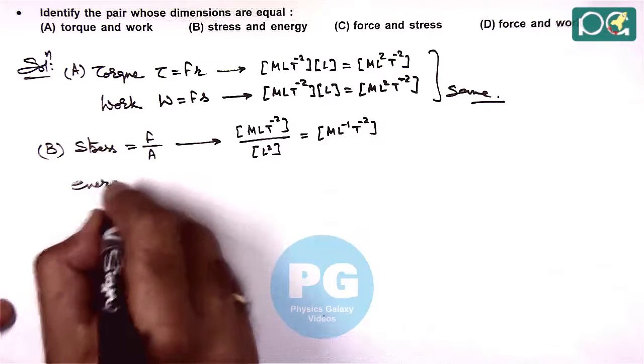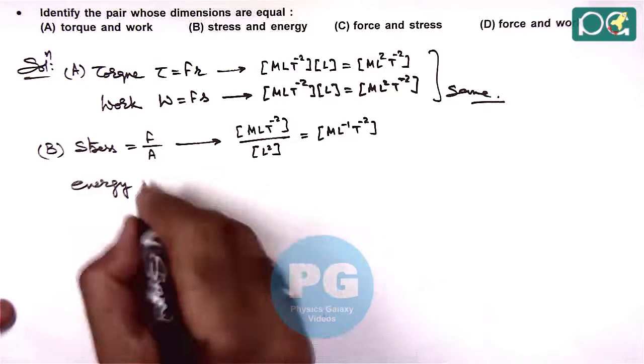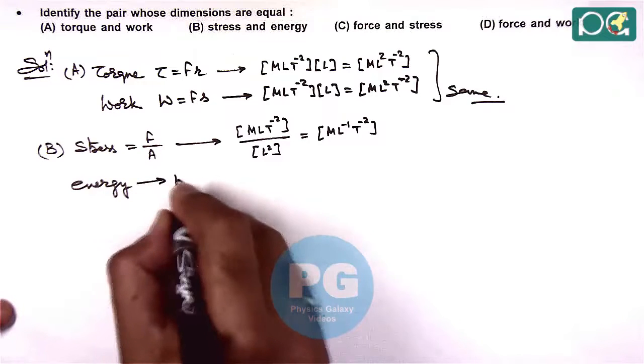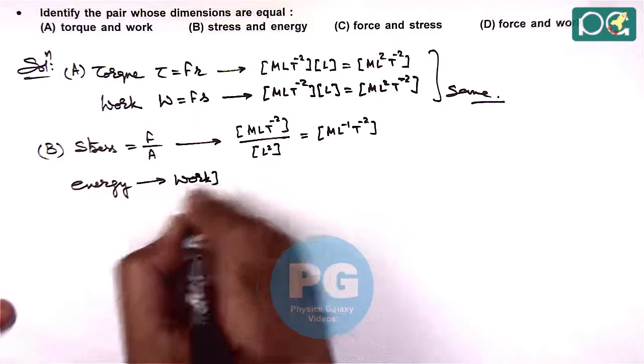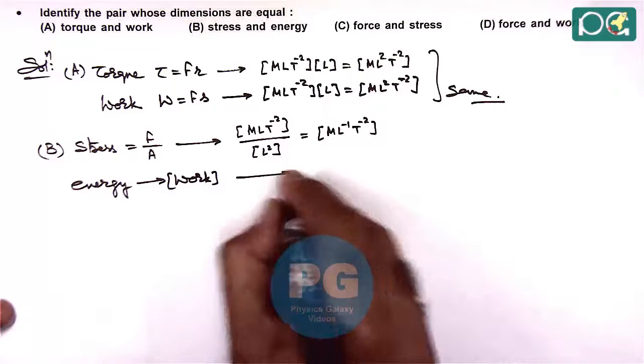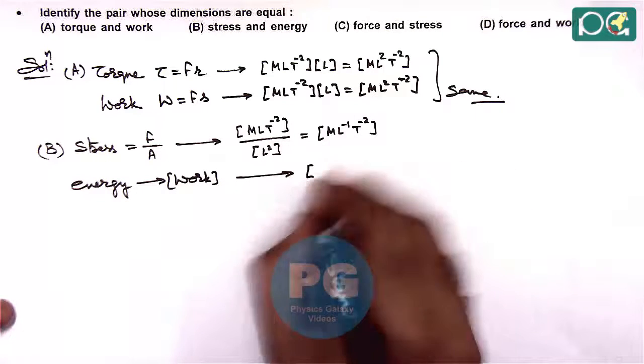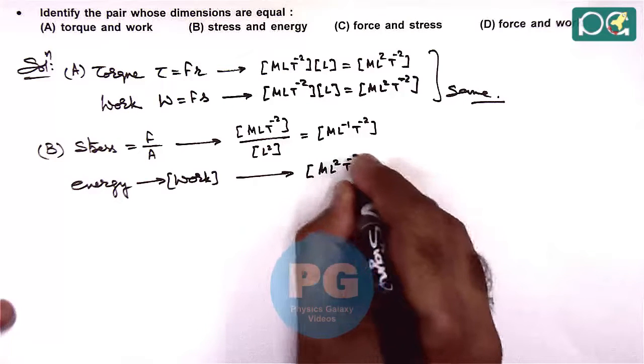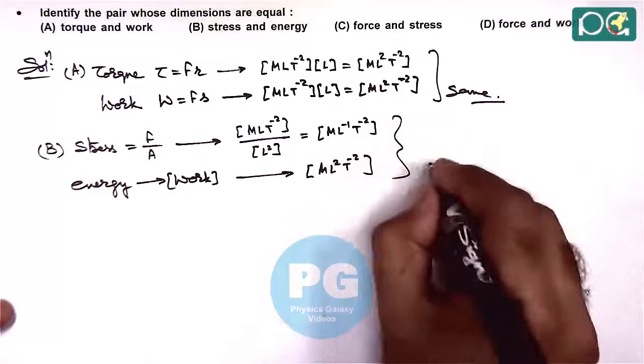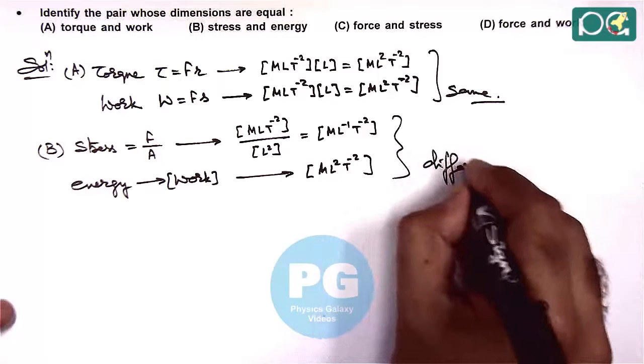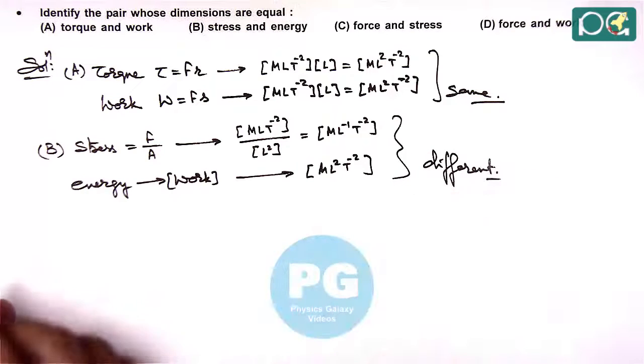And if we talk about energy, then energy is same as that of work in terms of dimensions. So we are getting the dimension of work as M L 2 T minus 2. So here we can see these are different, these are not having same dimensions.